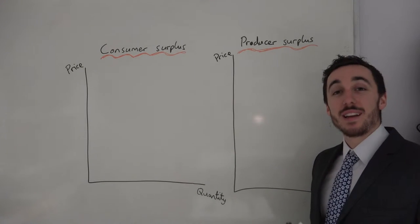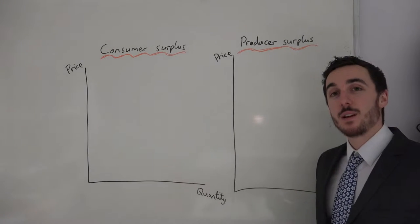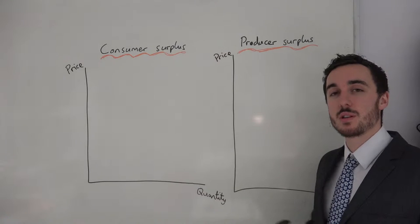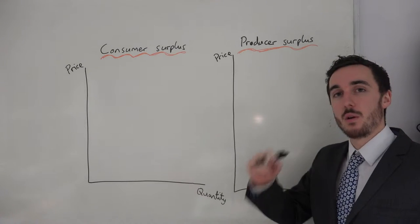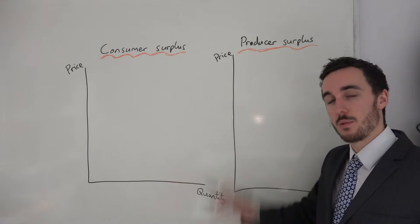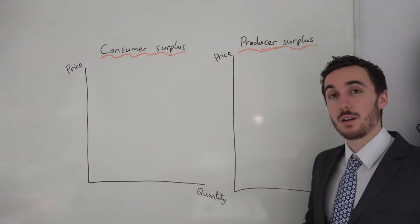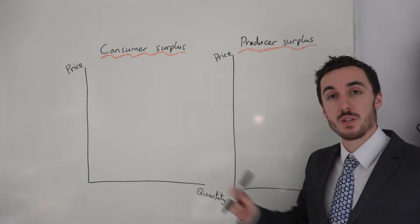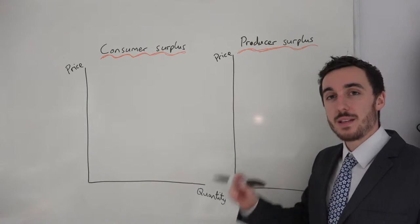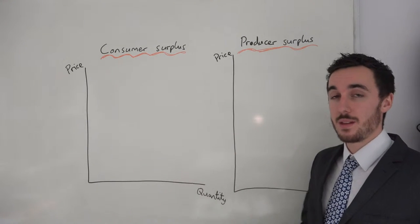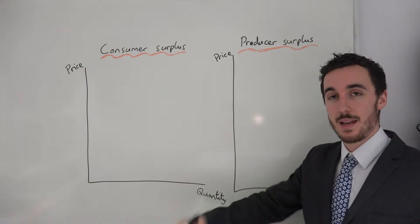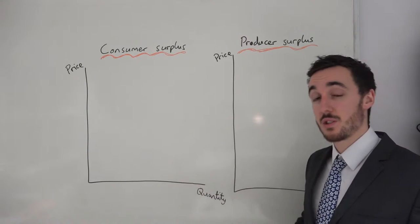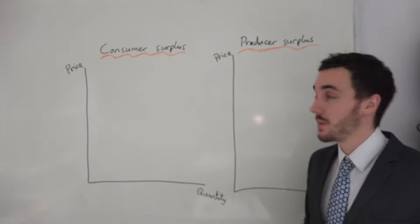Hello, I'm Mr. Burton and in this video we're going to be looking at consumer and producer surplus, what they mean and how we can show them on a diagram. So consumer surplus first off: this is the difference between the price in the market and the price that consumers are willing to pay.